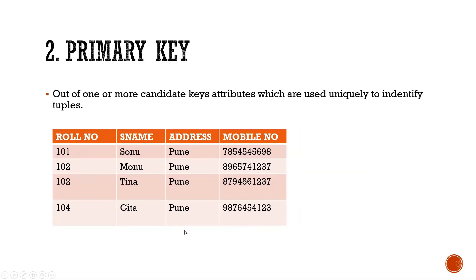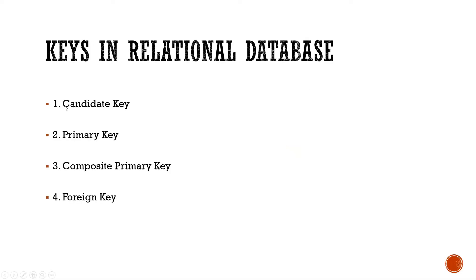So students, we have discussed 4 keys today. The first one is candidate key — where two or more values are unique. Next is primary key — only one uniquely identified value. Third is composite primary key — also a primary key, but where two columns or two attributes together form the primary key. And fourth is foreign key — derived from the primary key of another table. This is all about keys in a relational database table. Hope you have understood. You can ask me in the comment box. Thank you, and wait for the next video.